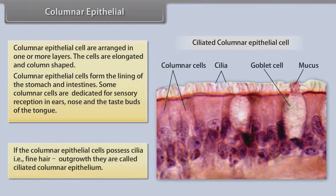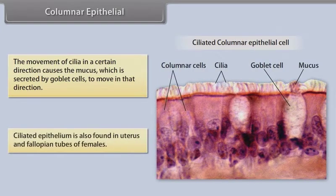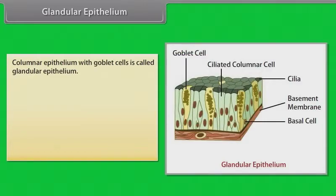If the columnar epithelial cells possess cilia — that is, fine hair outgrowths — then they are called ciliated columnar epithelium. The movement of cilia in a certain direction causes the mucus, which is secreted by goblet cells, to move in that direction. Ciliated epithelium is also found in the uterus and fallopian tubes of females.